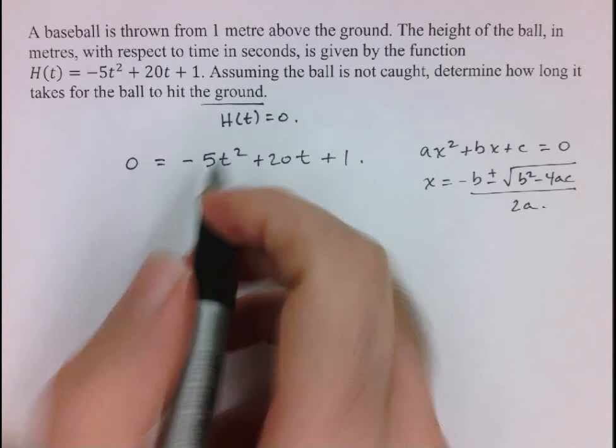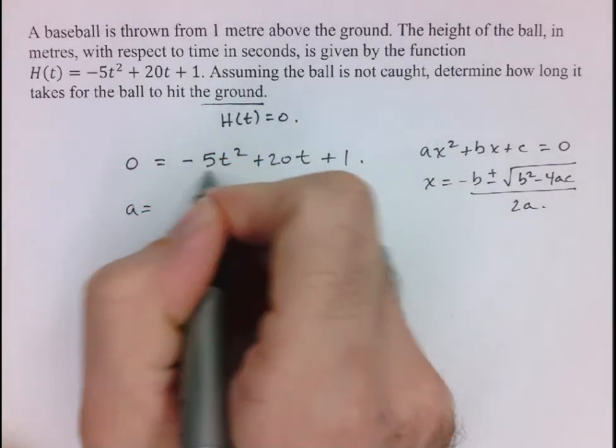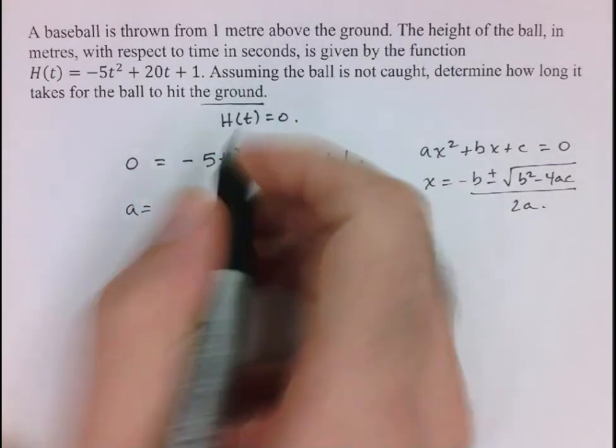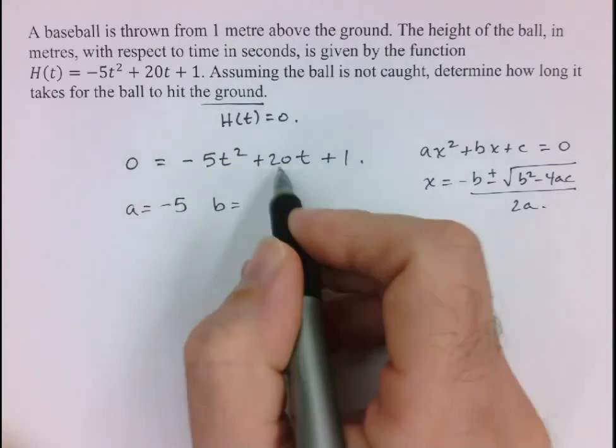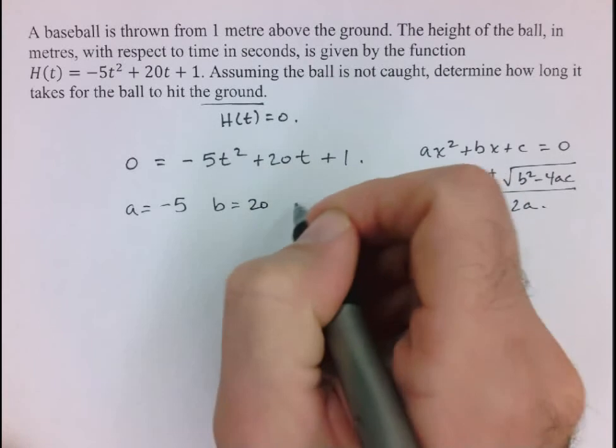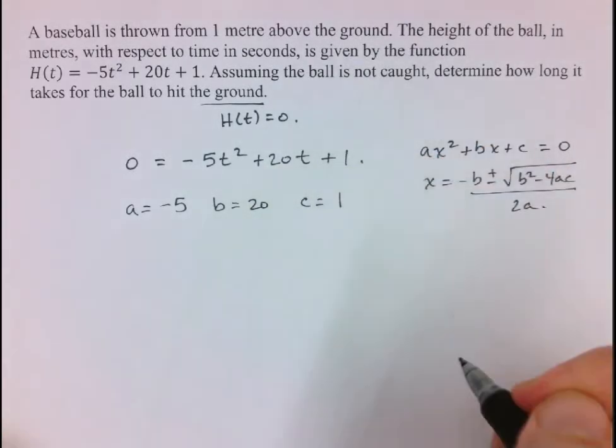So the first thing I want to do here is identify what a, b, and c are. So a here is the coefficient of t squared, so negative 5. The b value is going to be the coefficient of t, here 20, and then the c value is just the constant at the end, which is equal to 1.